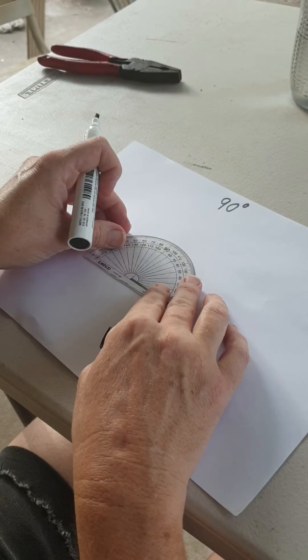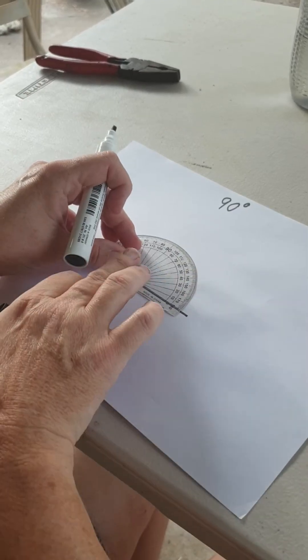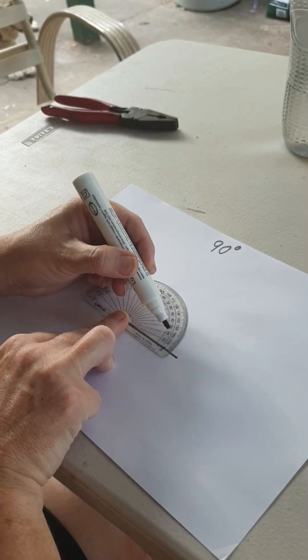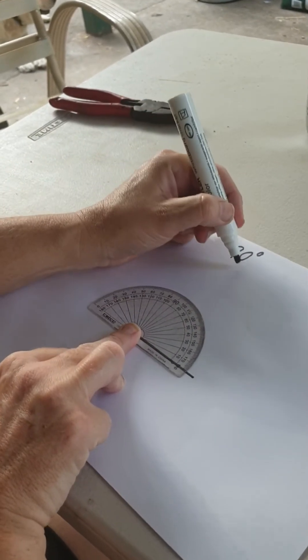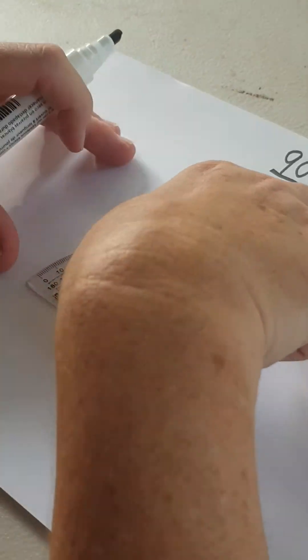Then we look at the protractor on the inside numbers. You've got 0, 10, 20, 30, 40, all the way up to 90. That's what we want, 90 degrees. So we put a little dot there.